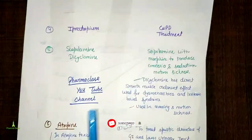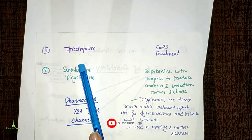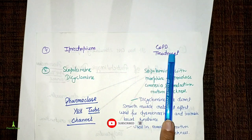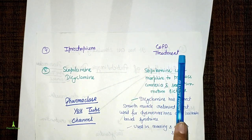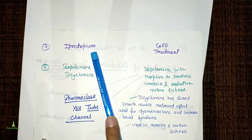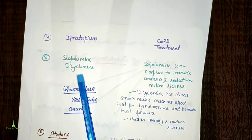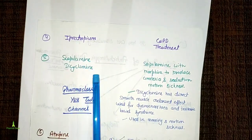Next, ipratropium and tiotropium are used in the treatment of asthma and chronic obstructive pulmonary disease (COPD) because they have bronchodilator effects.